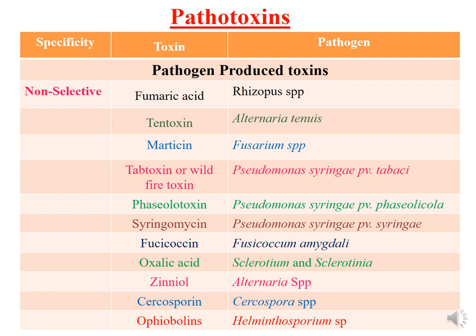Non-selective toxins are not host-specific — they are produced even when the pathogen infects a non-host plant. Examples include: fumaric acid produced by Rhizopus; tentoxin from Alternaria tenuis; marticin from Fusarium species; tabtoxin — also known as wildfire toxin — produced by Pseudomonas syringae pv. tabaci; phaseolotoxin from Pseudomonas syringae pv. phaseolicola; syringomycin from Pseudomonas syringae pv. syringae; fusicoccin from Fusicoccum amygdali; oxalic acid produced by Sclerotium and Sclerotinia during rot diseases; geniol from Alternaria species; sarcosporin from Sarcospora species; and ophiobolins from Helminthosporium.